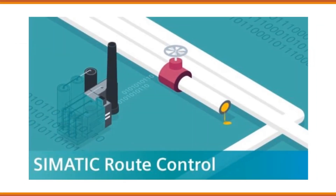Simatic Route Control. Simatic Route Control is a software solution offered by Siemens for managing and optimizing the movement of materials and products within a production facility. It provides tools to define and control material flow routes, ensuring efficient and reliable logistics in manufacturing plants.